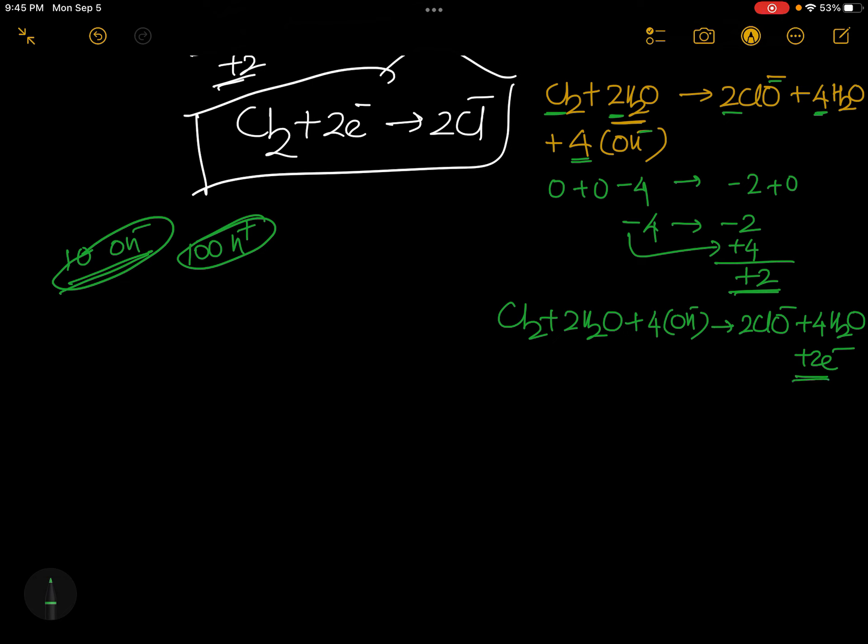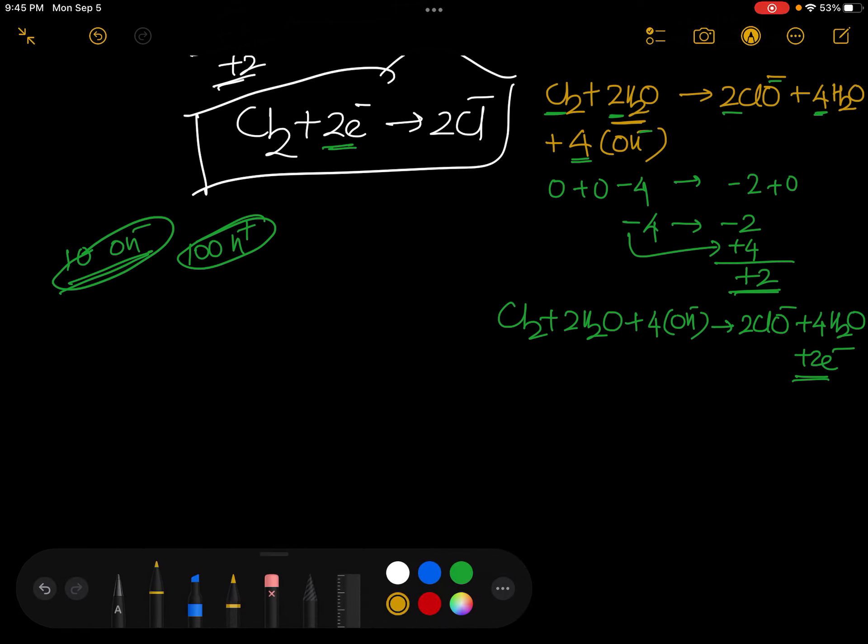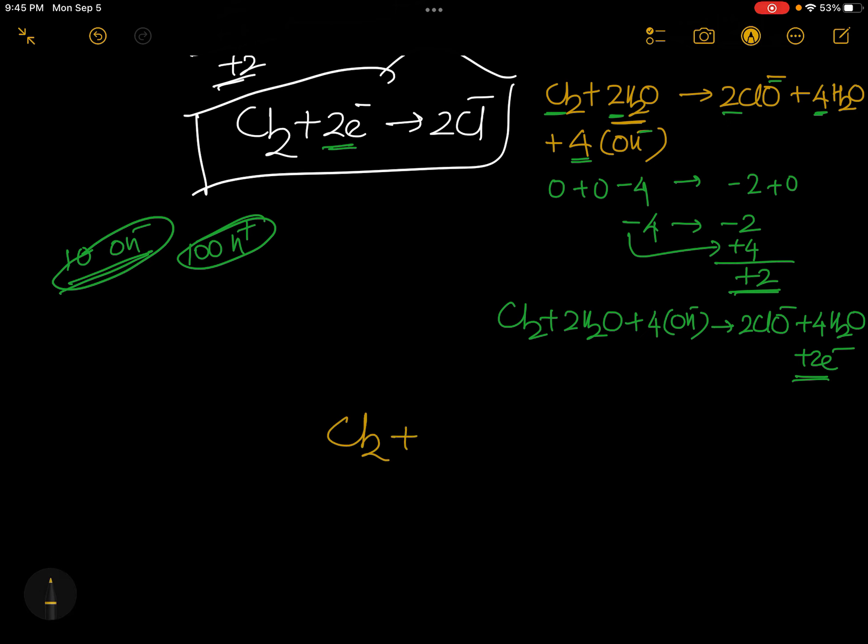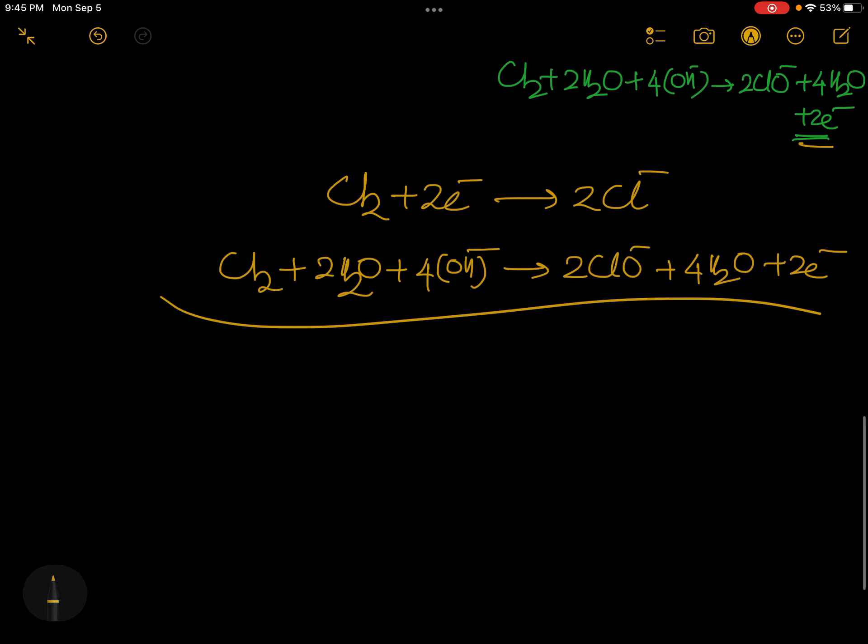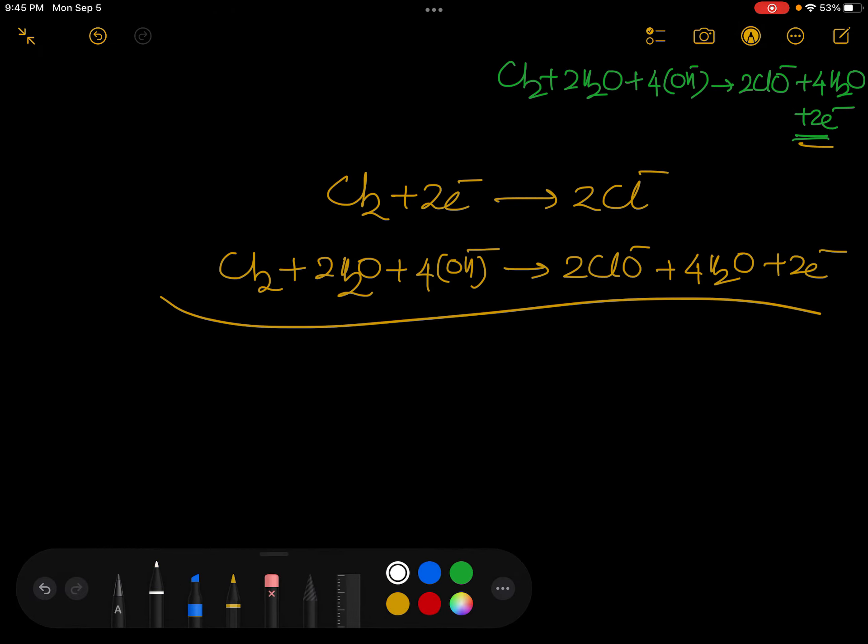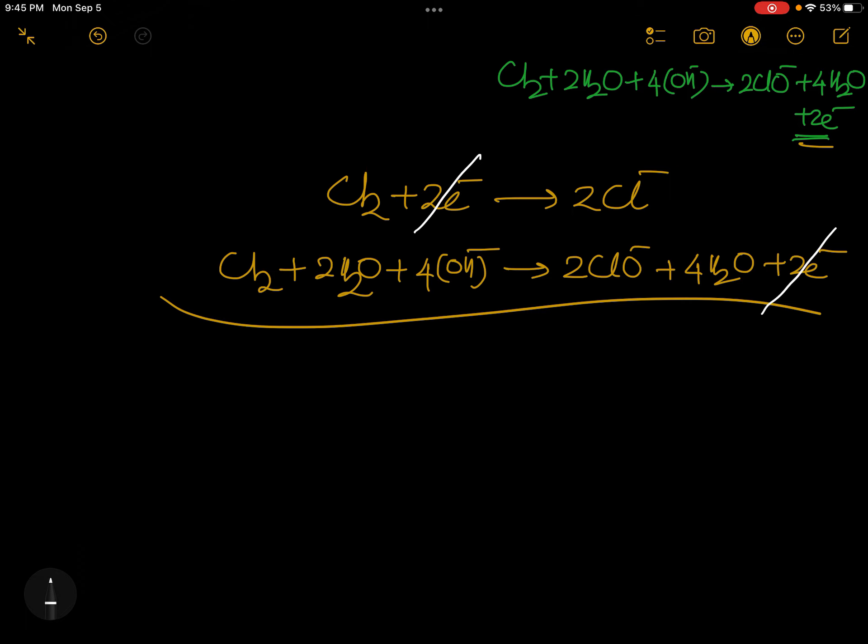We always put OH minus in bracket. Otherwise what happens - after some time you might think something else was there. Okay? Two electrons are here. If you gave 10 OH minus, later you might think this is H minus. To avoid all such nonsense, we are just using this. You see here, two electrons are there, here two electrons are there. Where number of electrons are same, simply add those two equations. See, Cl2 plus 2e gives rise to 2Cl minus. Add this here - Cl2 plus 2H2O plus 4OH minus gives rise to 2ClO minus plus plus plus 4H2O plus 2 electrons. Now cancel - two electrons, two electrons on opposite sides cancelled.